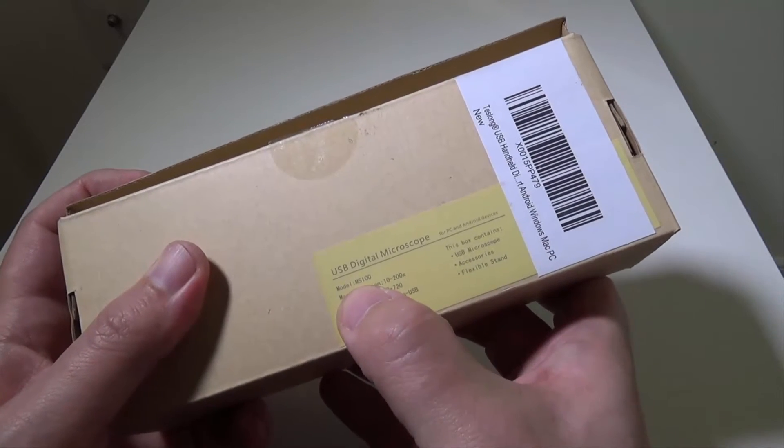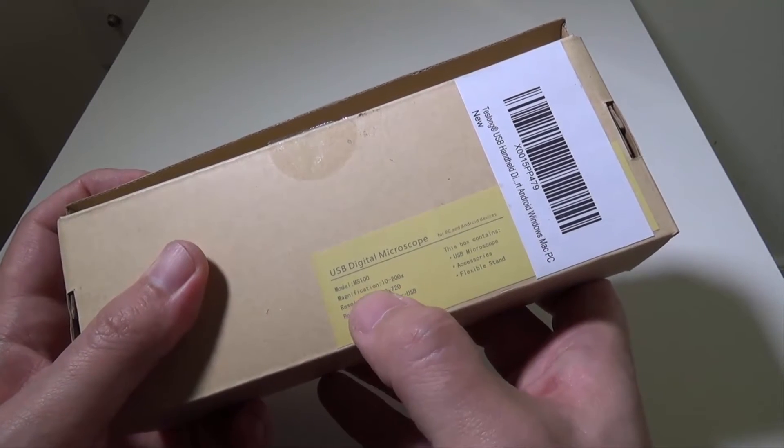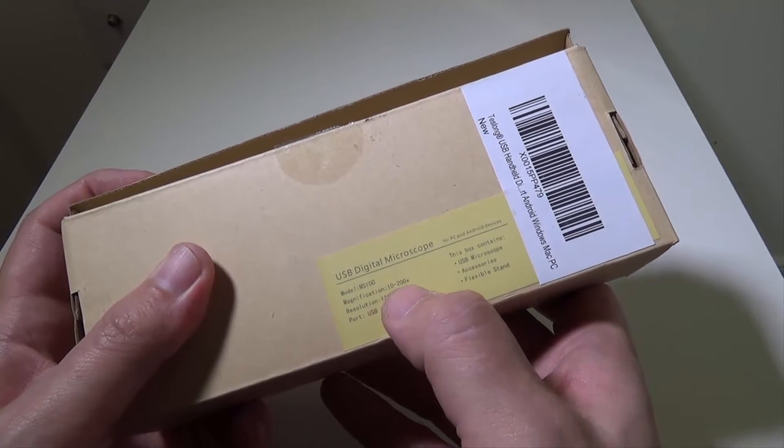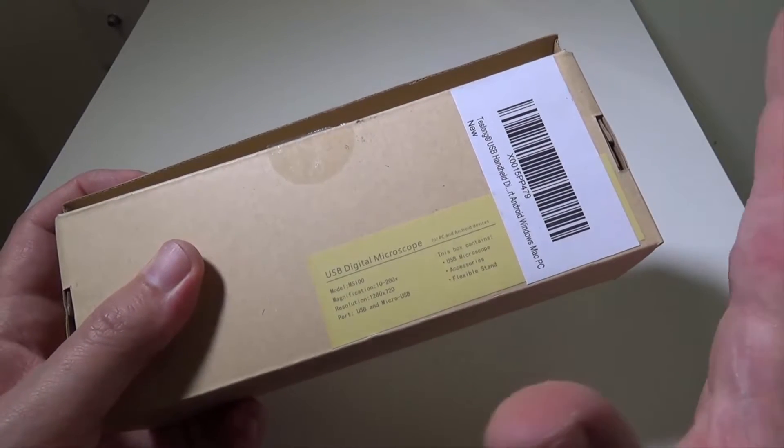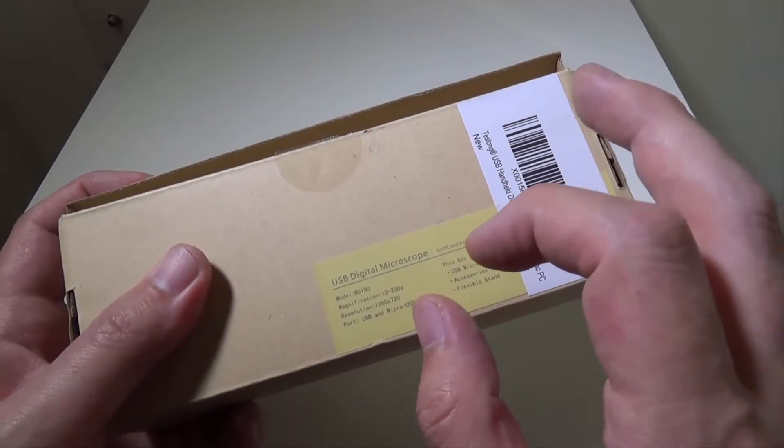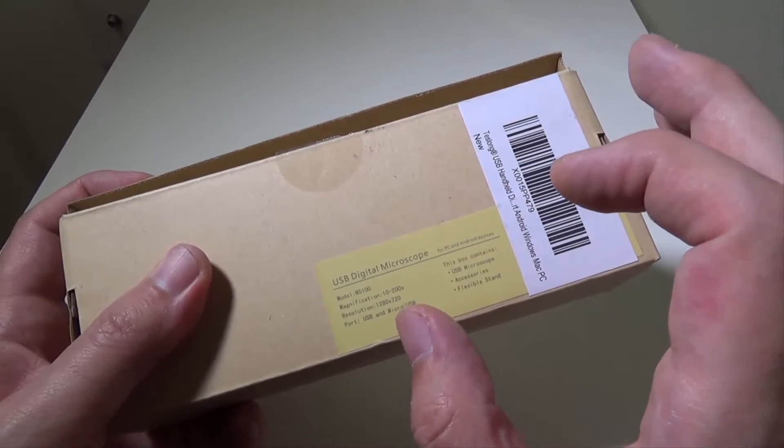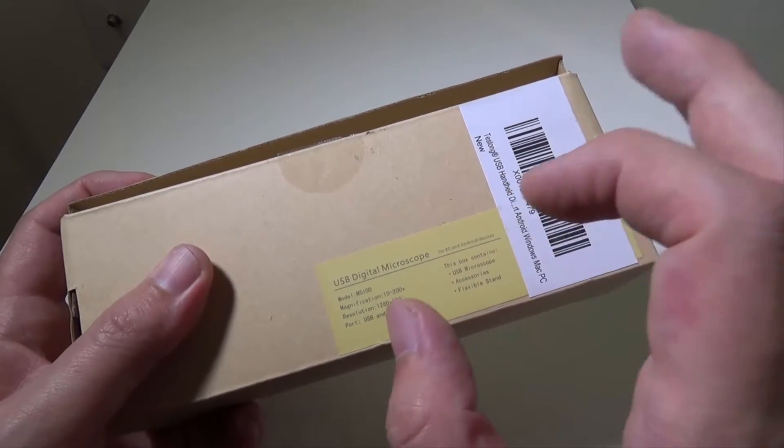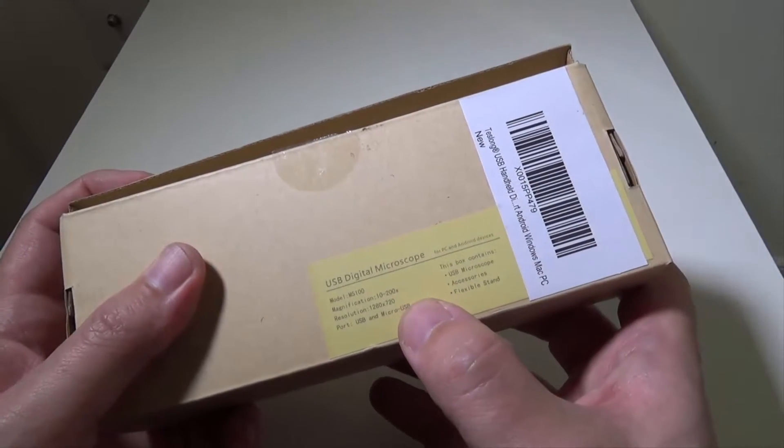The model number on here is MS100. The magnification is 10-200x so depending on how far away you get, it also has a focal range of 10mm to 500mm so you can get further away and get a good picture.